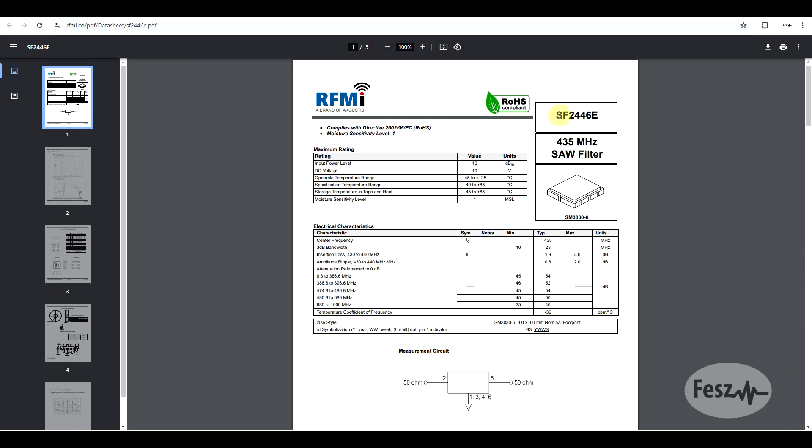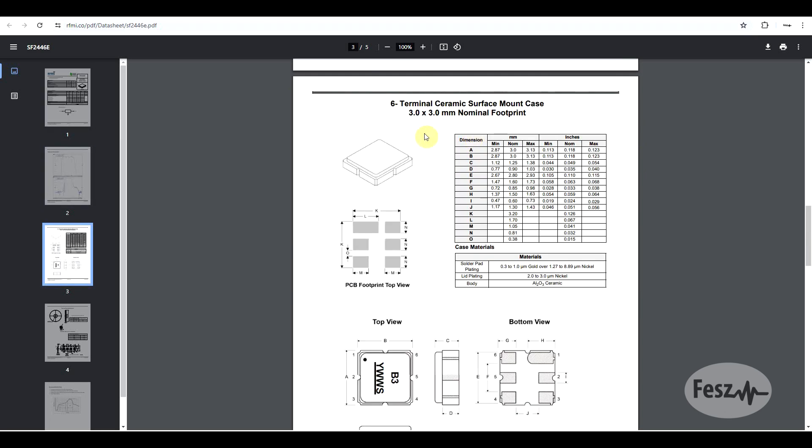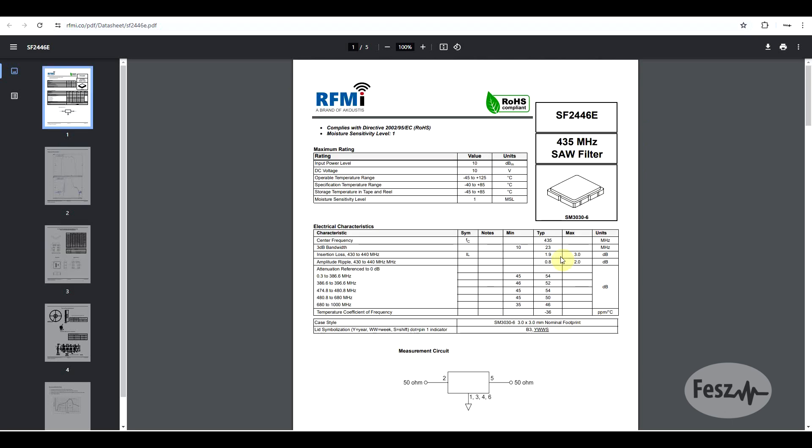One of the nice things about SAW filters is that based on their design, you can find 50 ohm matched inputs and outputs. There is no need for any special impedance matching if used in the correct impedance system. This particular component, the SF2446E, comes in a tiny 3x3mm package. This component covers the 70cm band, centered around 435MHz, and has a 3dB bandwidth of at least 10MHz.